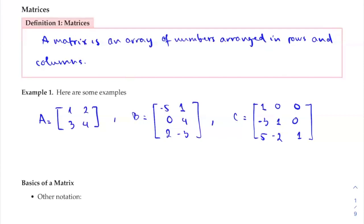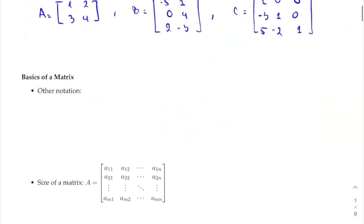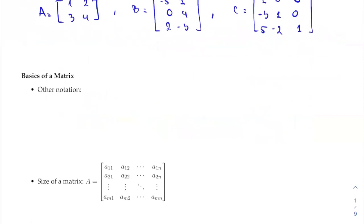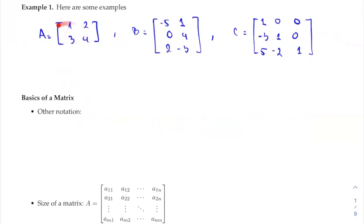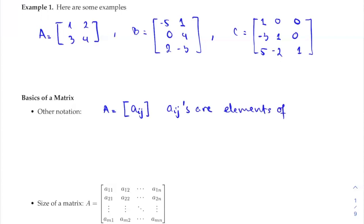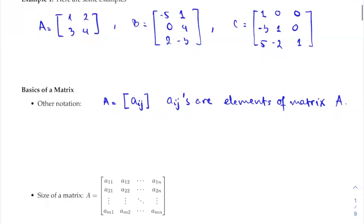There are other ways to represent a matrix. Instead of listing out all the entries, you can write A as bracket a-sub-ij, where a-sub-ij are elements of matrix A. Here i and j are the indices: i is the row index and j is the column index.